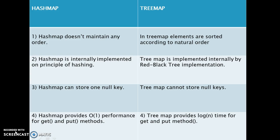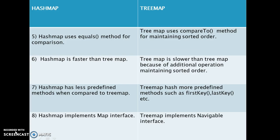TreeMap provides O(log n) time for get and put methods. So whenever we are adding or retrieving elements from HashMap or TreeMap, this performance difference applies.